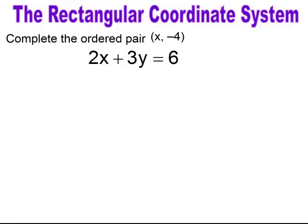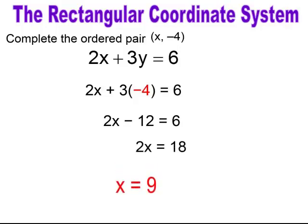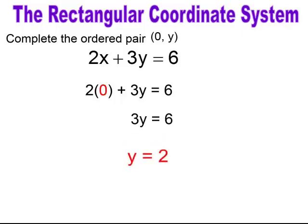Pause and try. In this case, you're given your Y-value is negative 4. You evaluate — you have a two-step equation: add 12, then divide through by 2, and you end up with your X-value equals 9. Pause and try. You're going to substitute 0 in for X. 2 times 0 will go away, leaving 3Y equals 6. Divide through by 3, and you get Y equals 2.